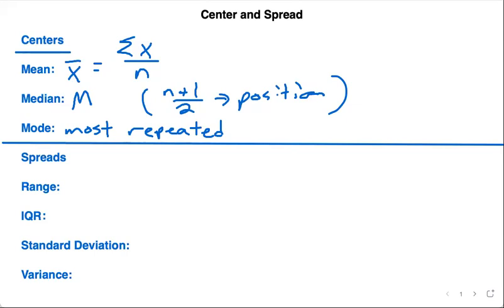Then we have spreads. This is called spreads or dispersion, basically how spread out the data is. First we have range.